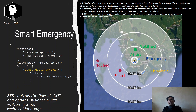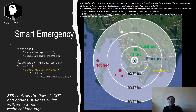Situational awareness level 2 means that rather than simply providing a description of the situation, we can understand the situation and address the relevant part to the relevant users. We have implemented something called smart emergency, and it is based on two technical features presented in past videos: one is the domain model and the other is the rule engine.